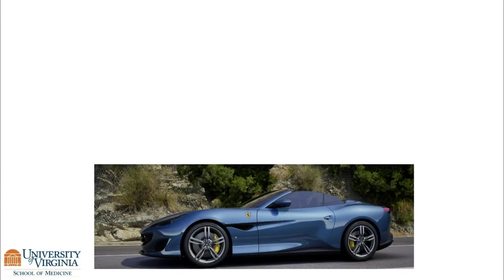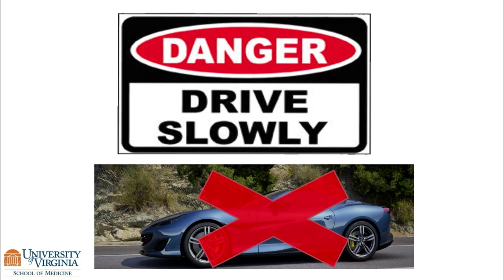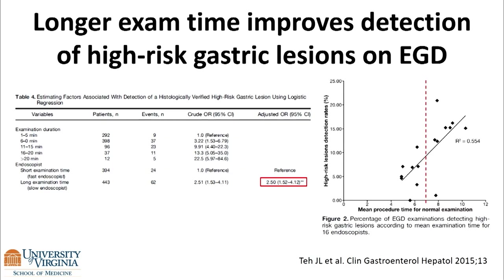A friend of mine at Stanford drives a Ferrari, and if you have the ability to drive from here to Carmel at speed safely, that's great. But when we're talking about endoscopy, drive carefully. This famous study from Singapore divided endoscopists into short and long examiners, where a long exam time is seven minutes — for the whole EGD, not just the stomach. They found statistically more high-risk gastric lesions, with 2.5 increased odds. So seven minutes for the whole EGD.